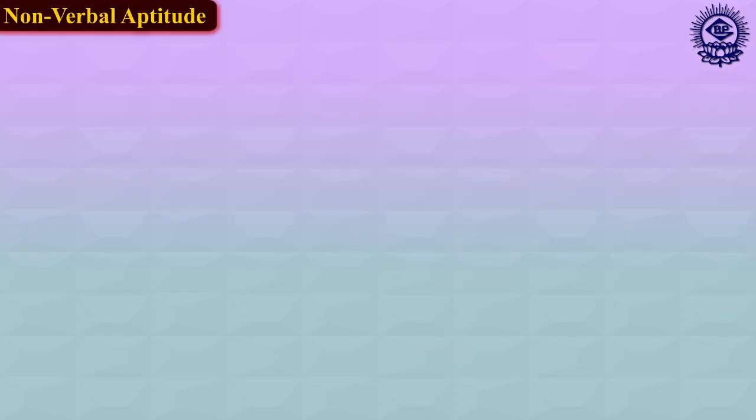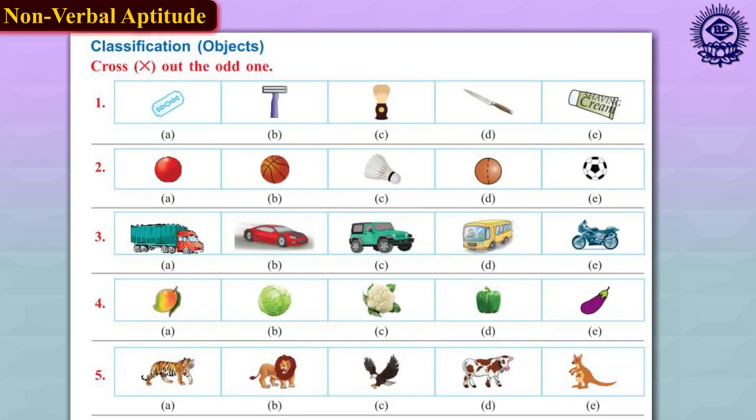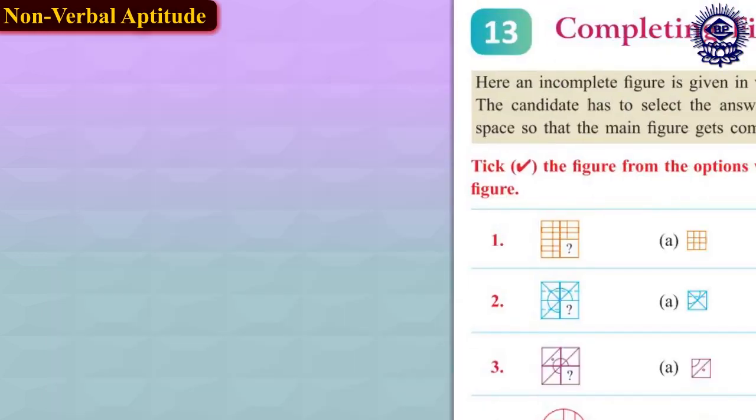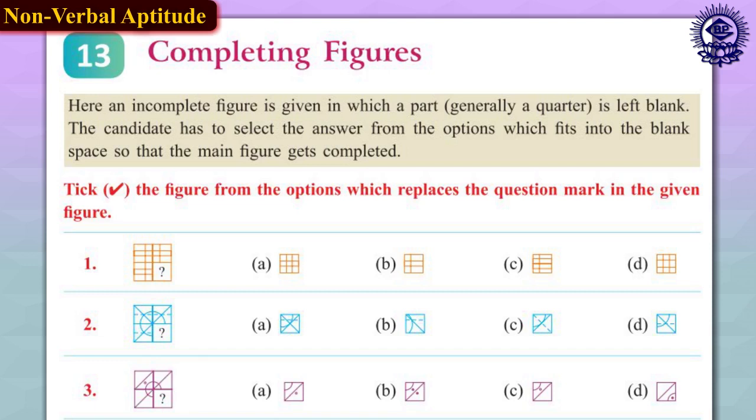Non-verbal aptitude. Non-verbal reasoning is problem solving using pictures and diagrams. It tests the ability to analyze visual information and solve problems based on visual reasoning. Often children are asked to look at the series of the diagrams and find the odd one out or the next in the sequence.